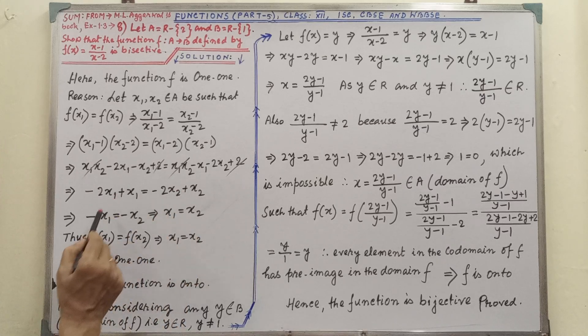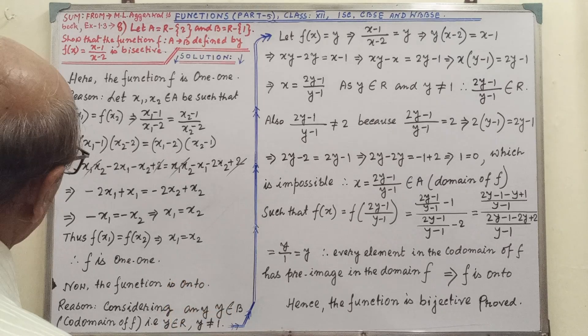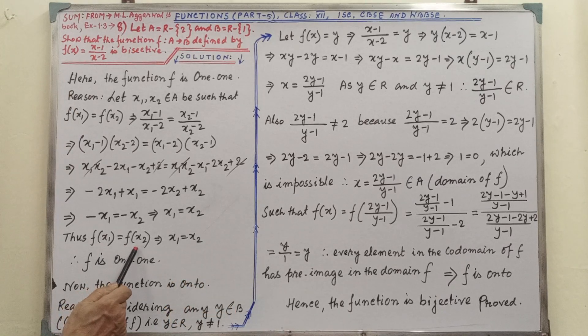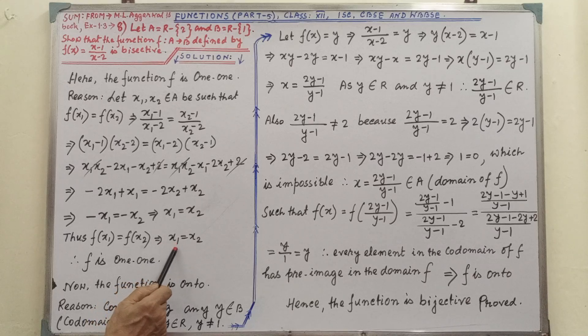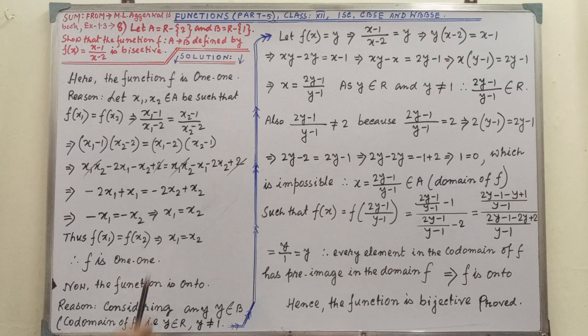Then by multiplication we are getting minus X1 plus X2, therefore implies X1 equal to X2. Does F(X1) equal to F(X2) implies X1 equal to X2? Therefore, F is 1,1, that logic is clear, so it is 1,1.